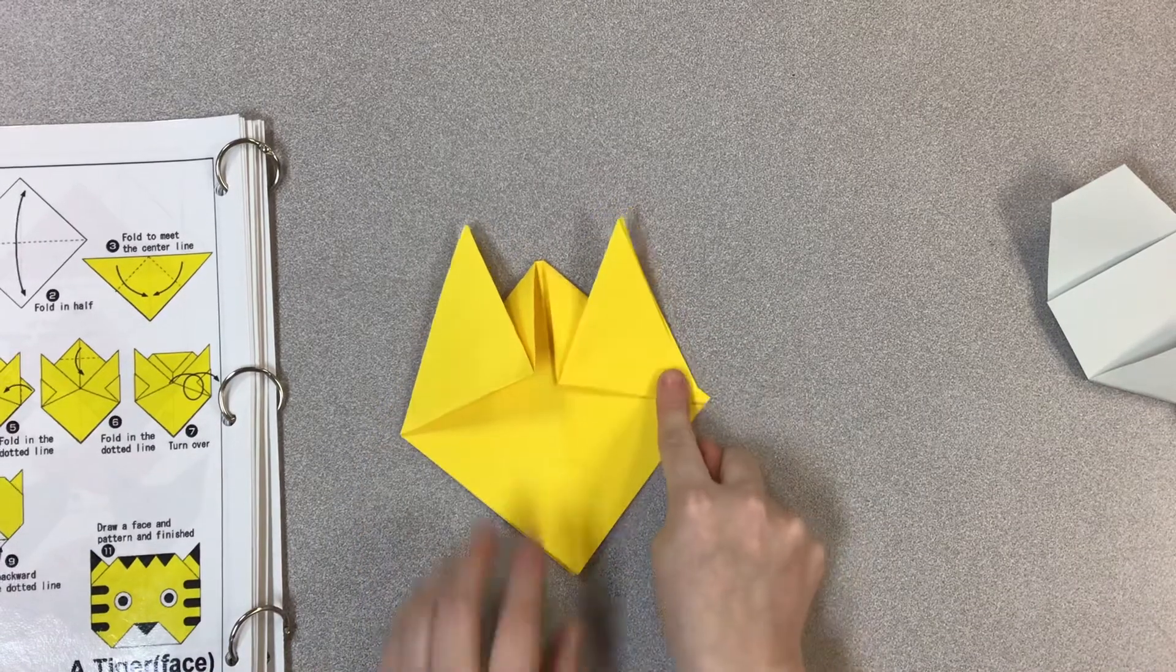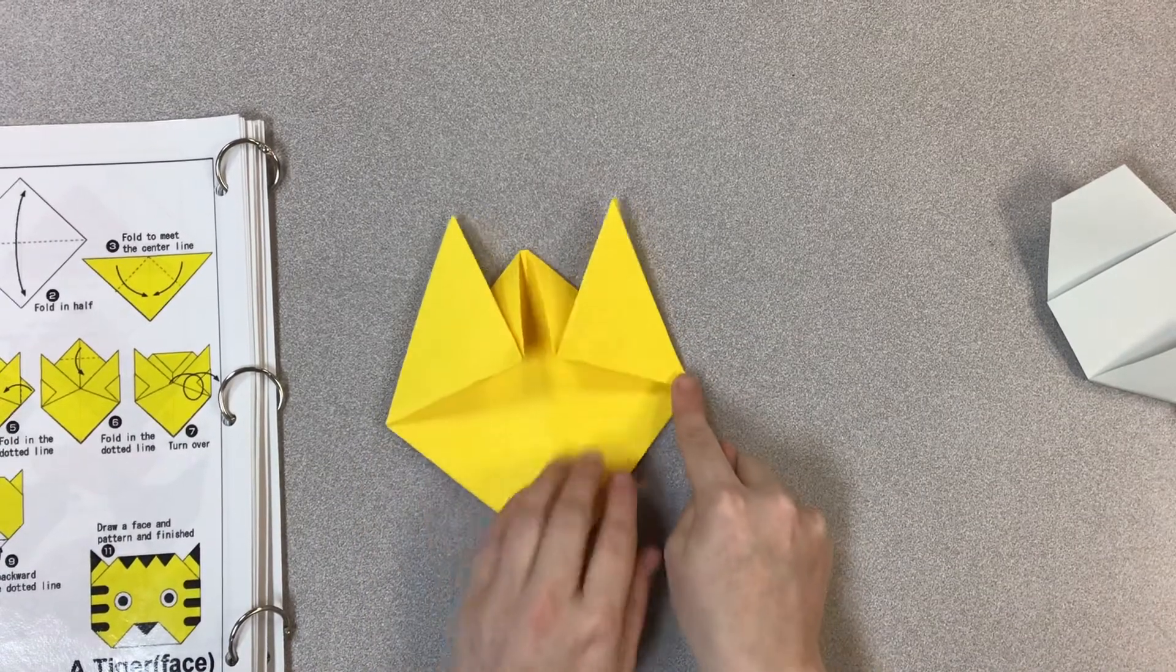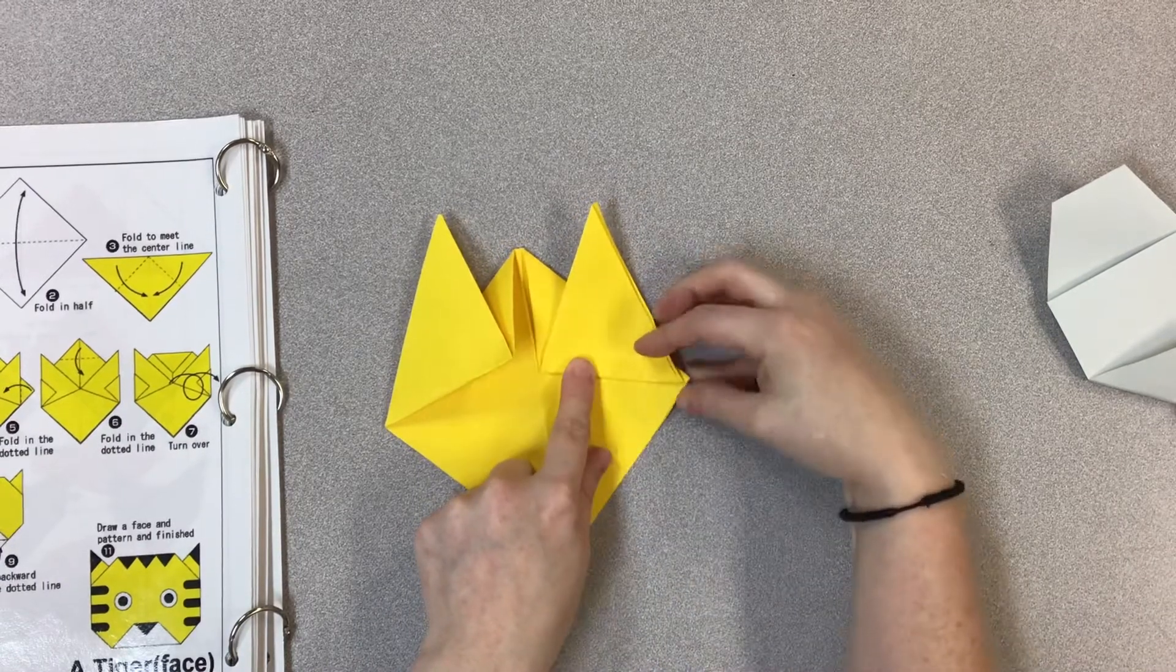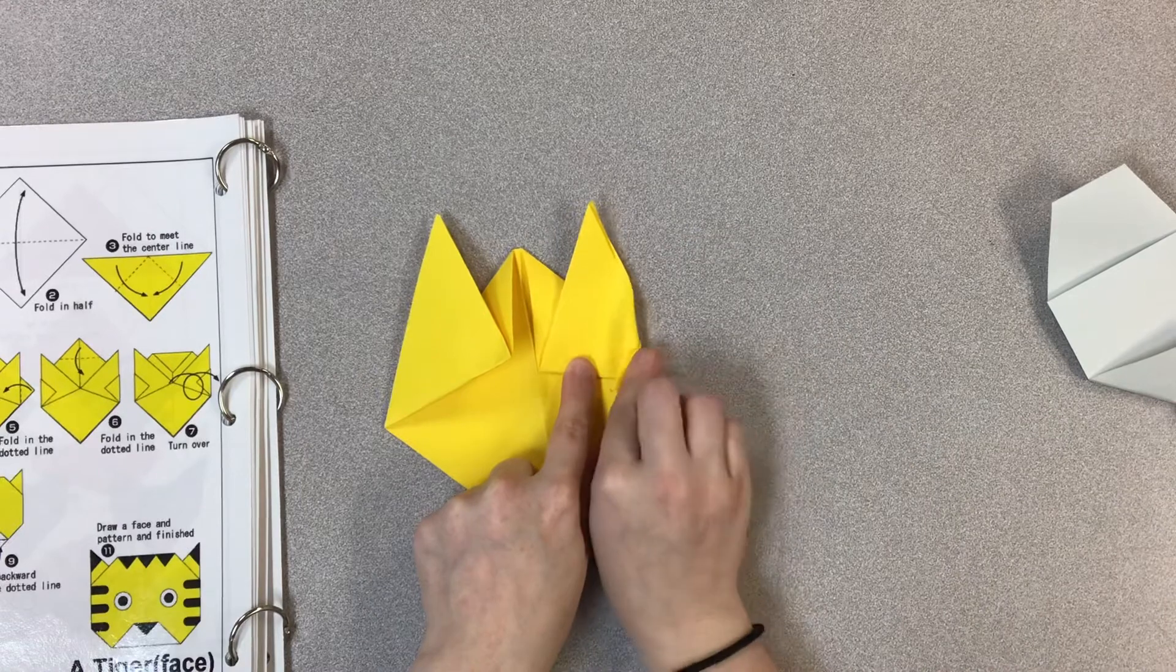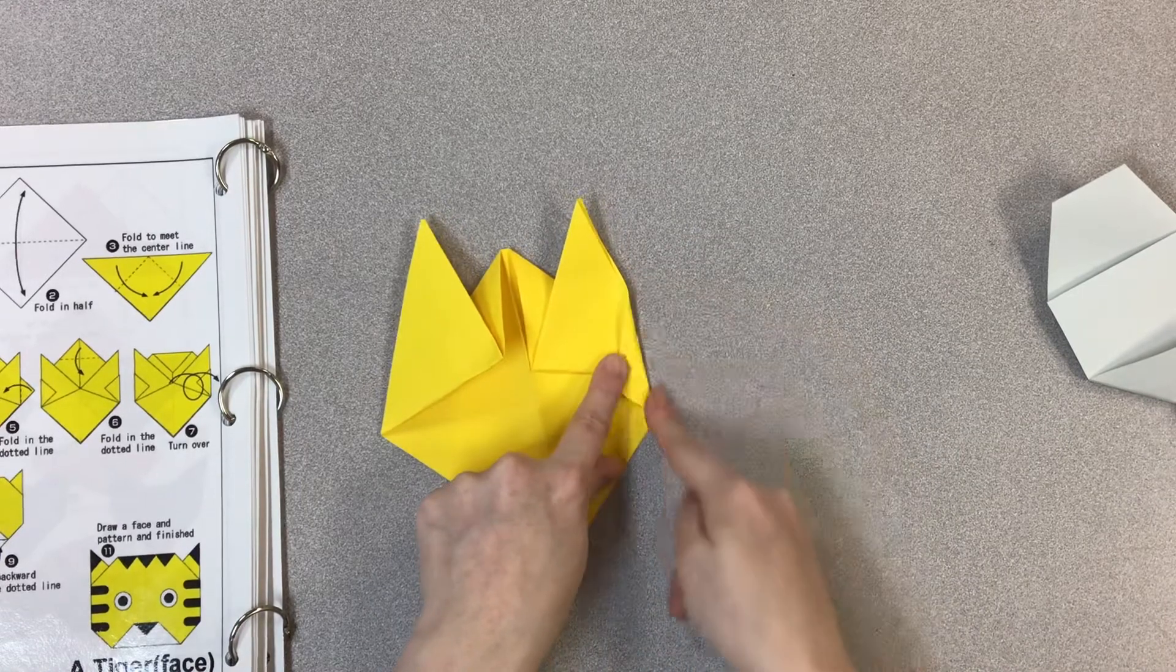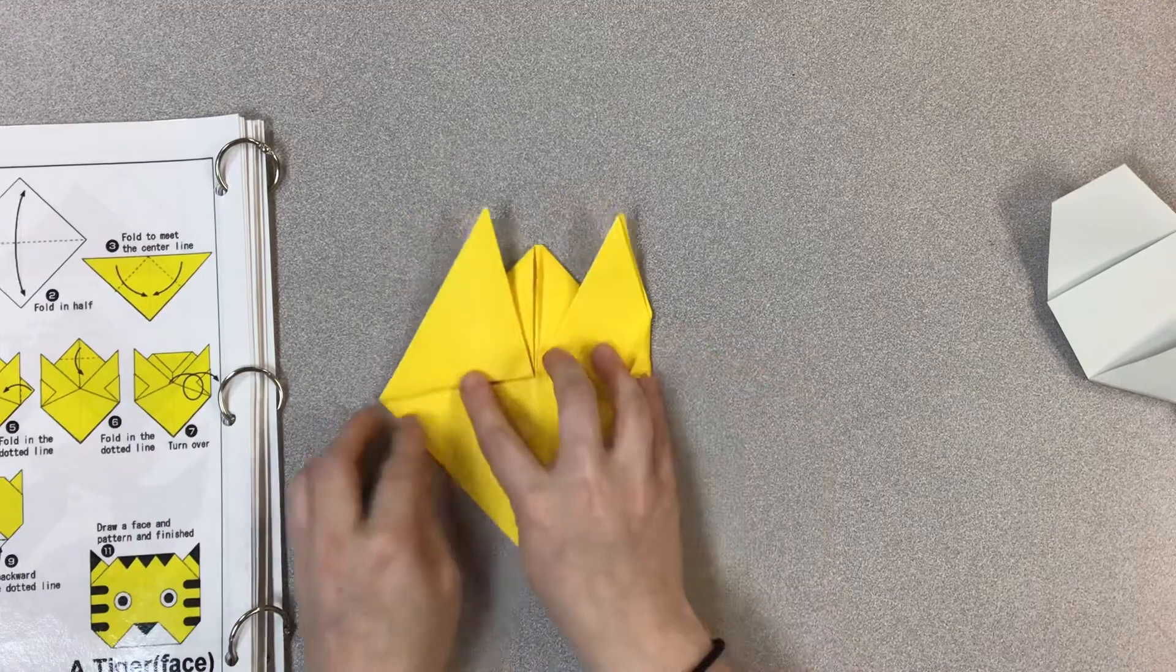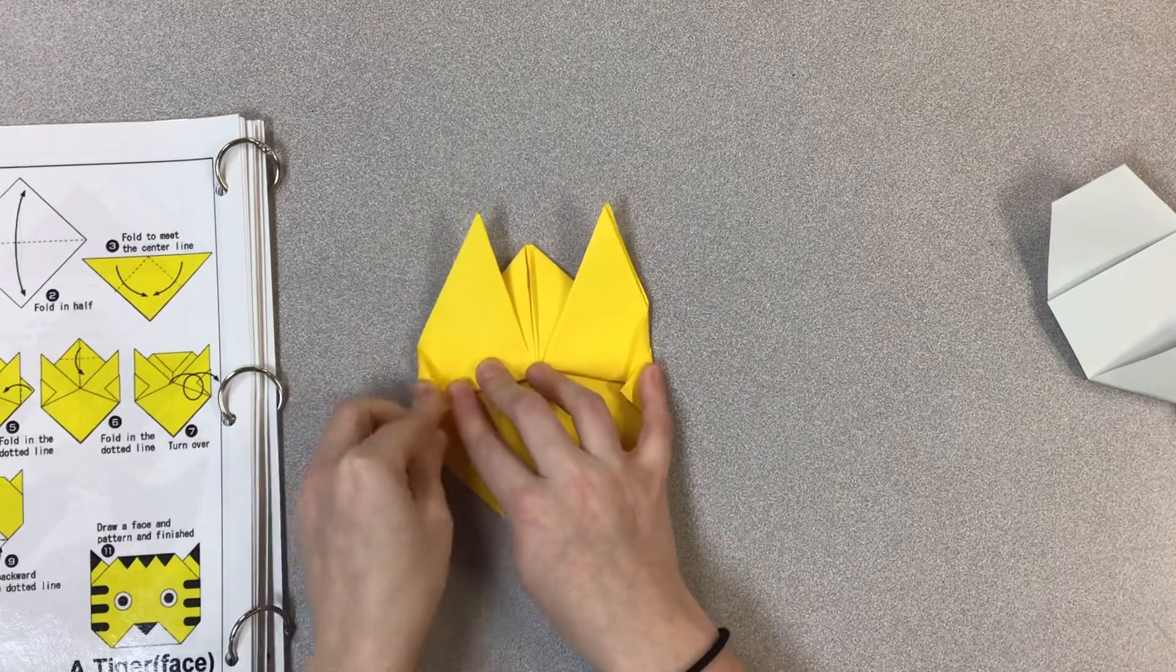Then these little points that we have right here, I'm going to take that and I'm just going to flip it in. So it creates kind of a nice straight line here. I'm going to take this point and flip it in.